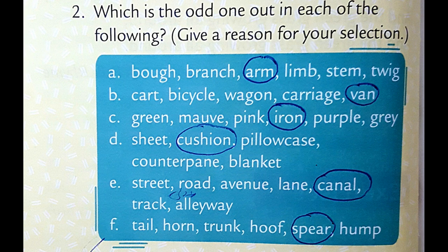Question 2: Which is the odd one out in each of the following? Give a reason for your selection. A: Arm - because it is not a part of a tree but of a human body. B: Van - because it has four wheels and an engine which the others don't have. C: Iron - because it is not a color. D: Cushion - because it is not a covering. E: Canal - because it is meant only for boats to travel across, not for cars or other vehicles.